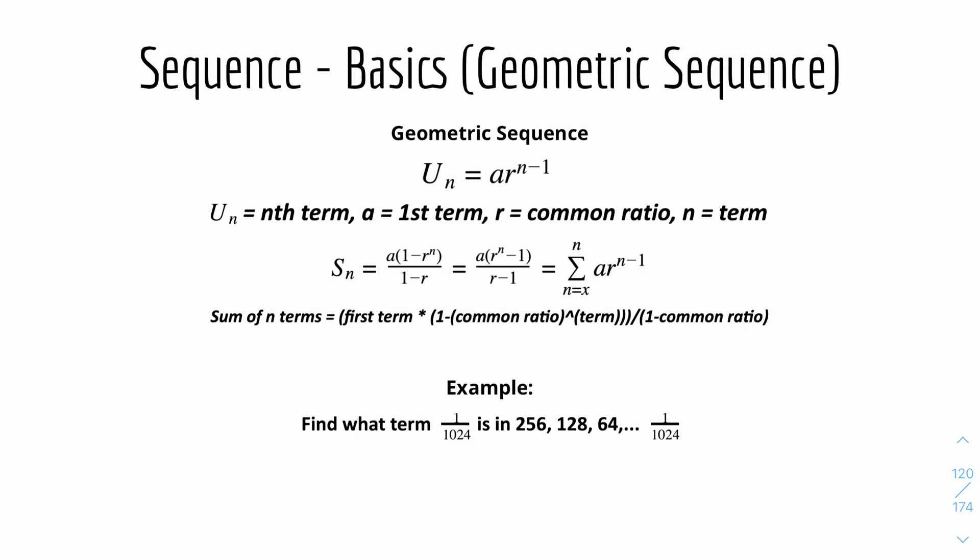Now we have geometric sequence, which uses similar notation but a different formula. The nth term is u-n equals a times r to the power of (n minus 1), where a is the first term and r is the common ratio. For the sum, there are two equivalent forms: S-n equals a times (1 minus r to the power of n) over (1 minus r), or equivalently a times (r to the power of n minus 1) over (r minus 1) — obtained by multiplying top and bottom by negative one.